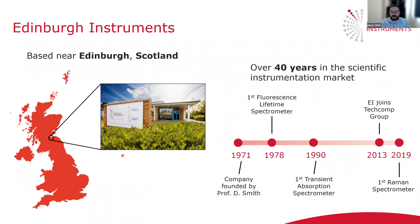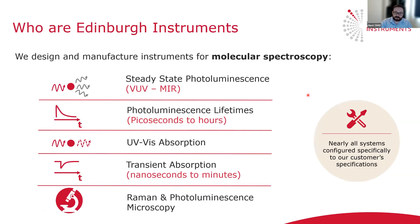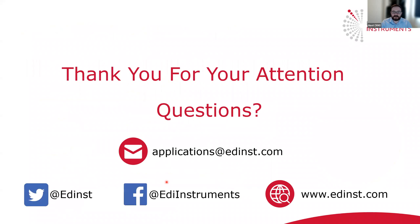That's all from the scientific side. Edinburgh Instruments is based near Edinburgh, Scotland, and we've been manufacturing scientific instrumentation for over 40 years. We manufacture a range of instrumentation for molecular spectroscopy, including steady state and lifetime photoluminescence, UV-vis absorption, transient absorption, and Raman and photoluminescence microscopes. Thank you very much for your attention — feel free to ask any questions.